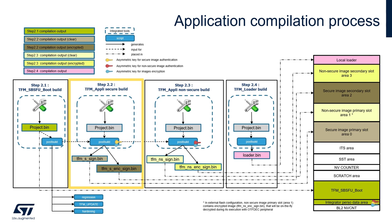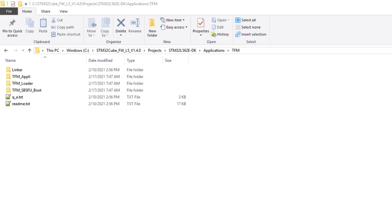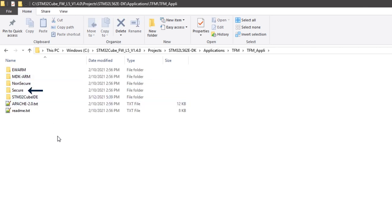This step creates the TFM secure binary, and through the post-build command integrated in the IDE project, it produces the TFM secure signed image in both clear and encrypted form. These images will be useful during development for testing the firmware update procedure of the secure image. The TFM appli project includes both the secure and non-secure application images. We will start with the compilation of the secure, then move to the non-secure code.